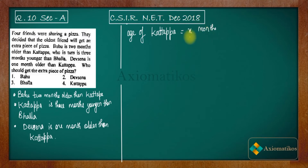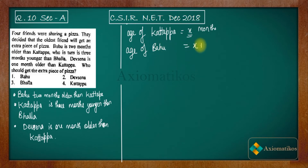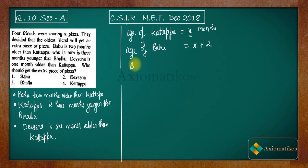We are considering age in months, since everything is given in months. So age of Katappa is X months. The age of Bahu will be X plus 2, because Bahu is two months older than Katappa. Please note that X is in months, not years. So X plus 2 is the age of Bahu. The age of Bhalla will be X plus 3, since Katappa is three months younger than Bhalla.